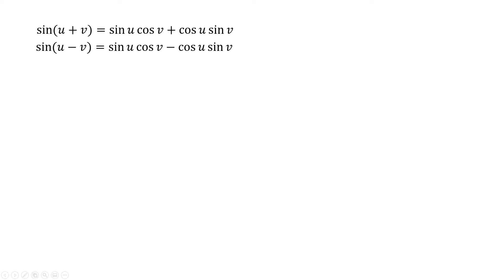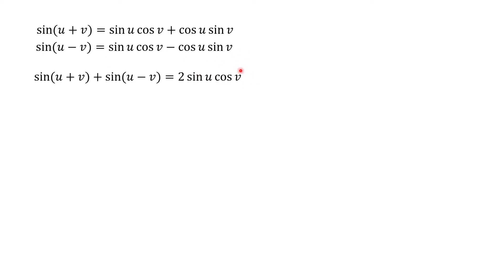We start with the formula for sine of a sum and sine of a difference — formulas we derived previously. Now we're going to add the top formula to the bottom formula. Both have sine(u)cos(v), so we get two of those. The next term, cos(u)sin(v), comes with a plus sign in one equation and a minus sign in the other, so they cancel out.